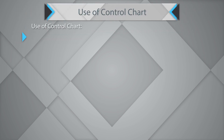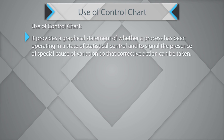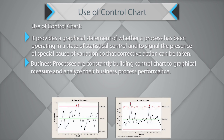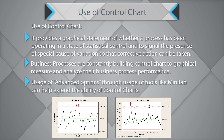Why use control charts? Control charts provide a graphical statement of whether a process has been operating in a state of statistical control and to signal the presence of special cause variation so that corrective actions can be initiated. Business processes are constantly building control charts to graphically measure and analyze their business process performance. Usage of advanced tools like Minitab can help extend the ability of control charts.